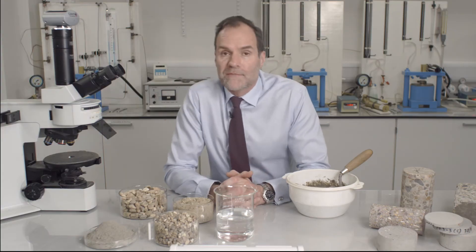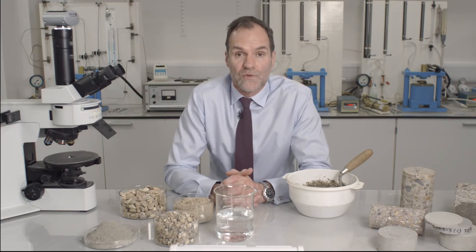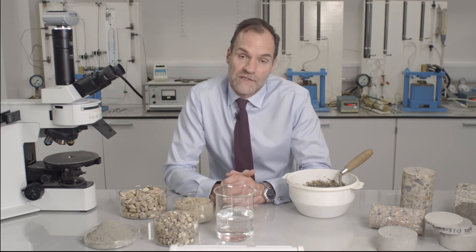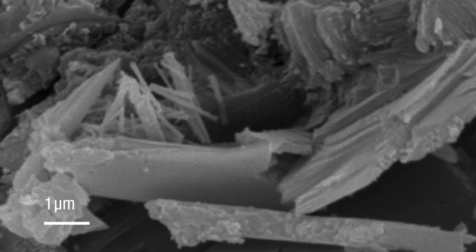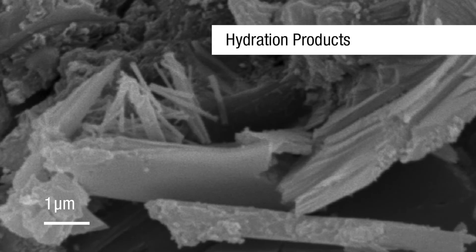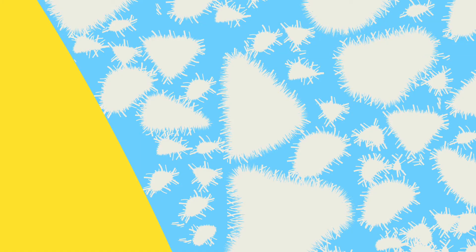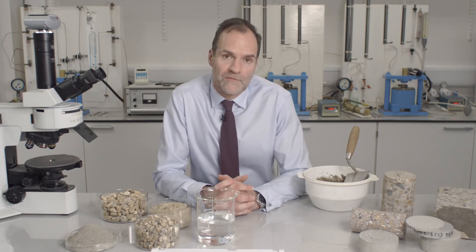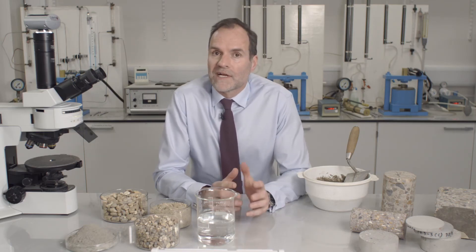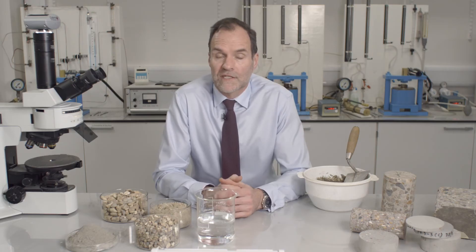Now as the cement comes into contact with water, the hydration reactions start and because what is produced is chemically complex, we call them hydration products. If we were to look at the cement paste again under the microscope a few hours after mixing, we'd see the hydration products starting to form. Cement and water react to form hydration products and it is these that bind the solid particles in concrete together.